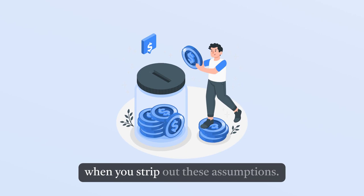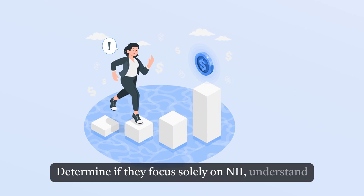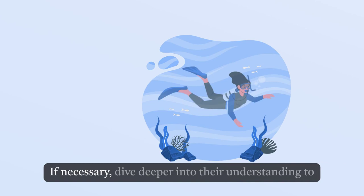Step 9: Evaluate the treasury team's understanding and priority of managing IRRBB. Determine if they focus solely on NII, understand EVE, and discuss swap rates going up and down. If necessary, dive deeper into their understanding to ensure they're effectively managing risk.